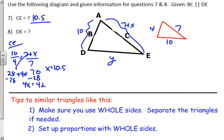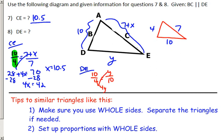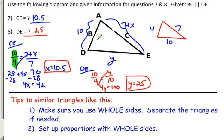To find DE, which is Y, I use the same ratio. I set up: 10 over 4 equals Y over 10. Cross multiplying: 4Y equals 100, so Y equals 25. DE equals 25. Separating the triangles makes these problems much easier — it's a step students often skip, but it's worth it.